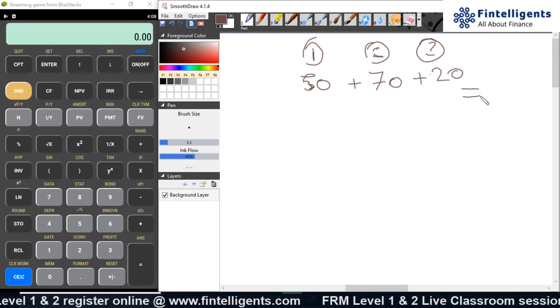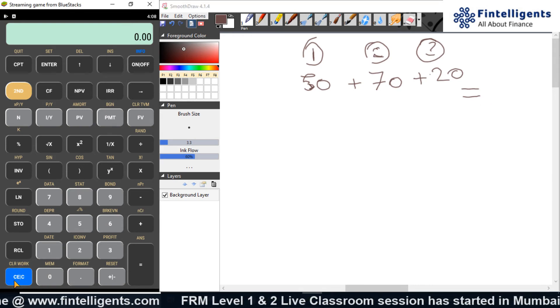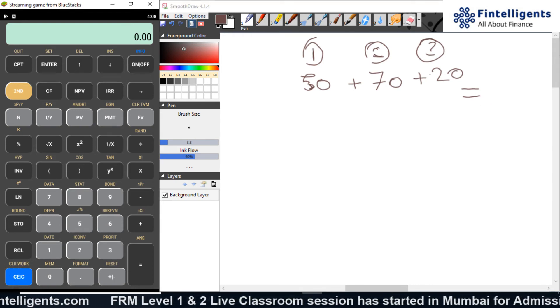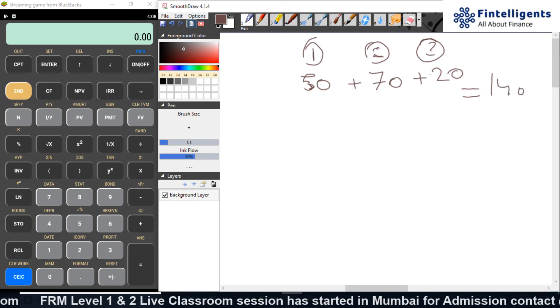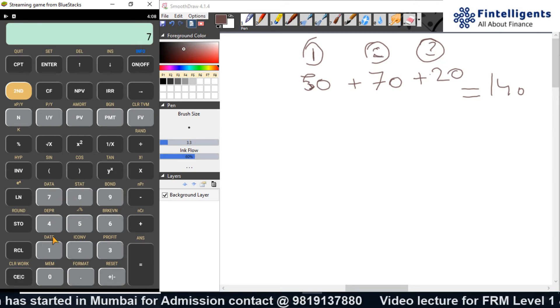So, what will be the answer? So, we know that for sure it is going to be 140. Right. Because it is 50, 70 plus 20. Now, how I do it effectively in the calculator?